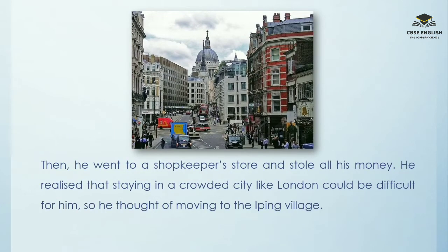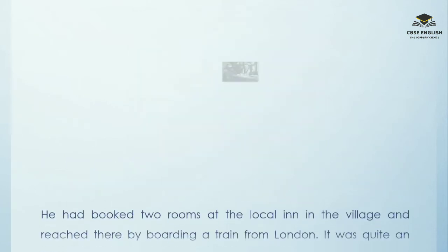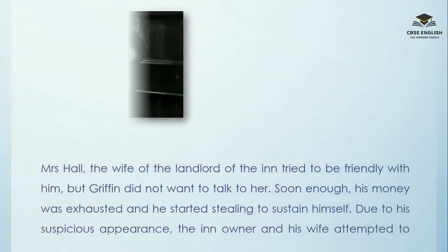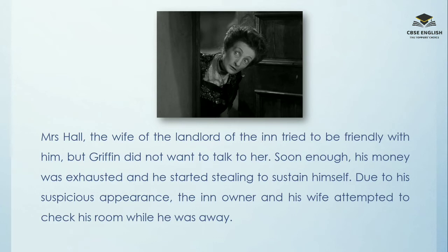Then he went to a shopkeeper's store and stole all his money. He realised that staying in a crowded city like London could be difficult for him, so he thought of moving to the Iping village. He had booked two rooms at the local inn in the village and reached there by boarding a train from London. It was quite an unusual experience for the villagers to see an outsider with a strange appearance who had come to stay at the hotel during winter. Mrs. Hall, the wife of the landlord of the inn, tried to be friendly with him, but Griffin did not want to talk to her. Soon enough, his money was exhausted and he started stealing to sustain himself.